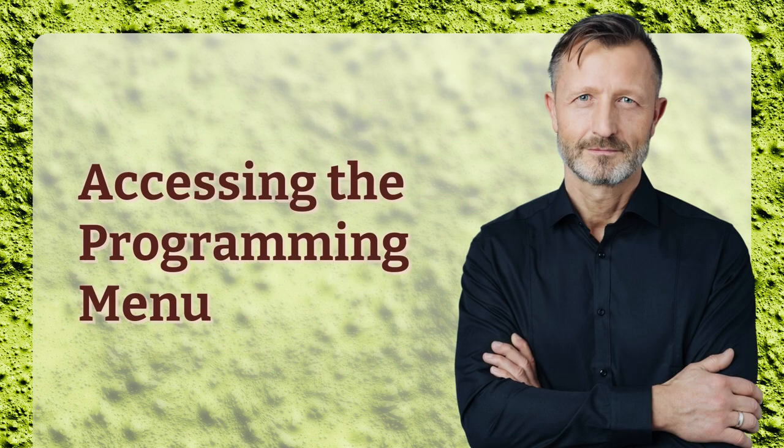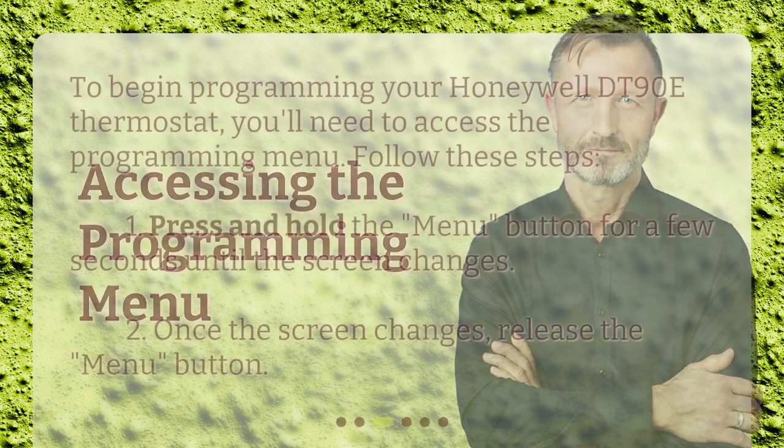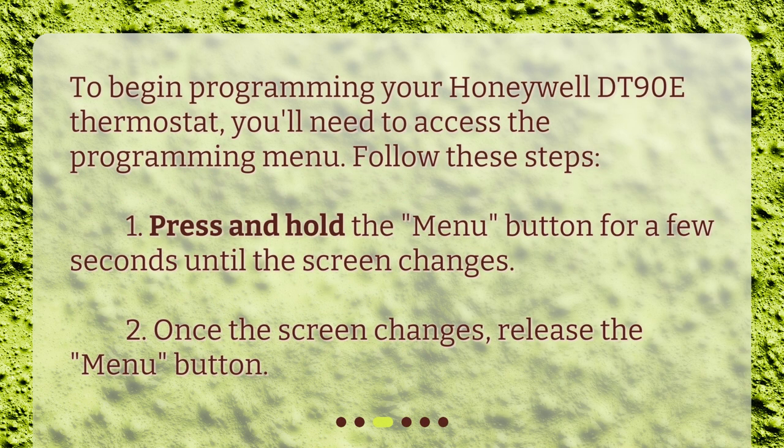Accessing the Programming Menu. To begin programming your Honeywell DT90E thermostat, you'll need to access the Programming Menu. Follow these steps: 1. Press and hold the Menu button for a few seconds until the screen changes. 2. Once the screen changes, release the Menu button.